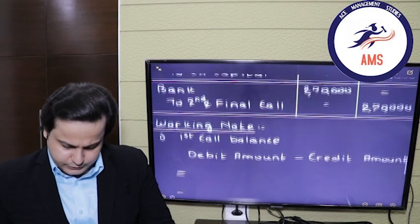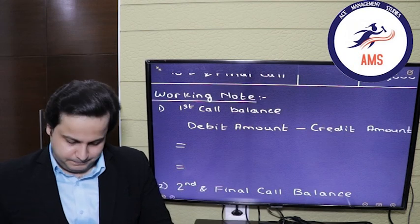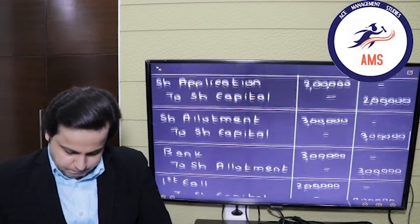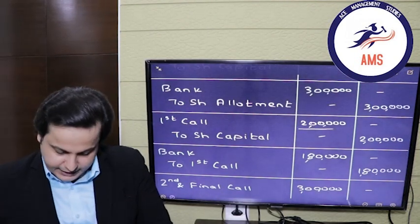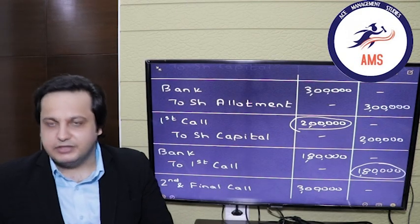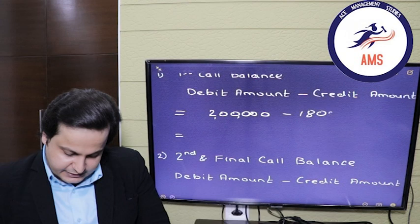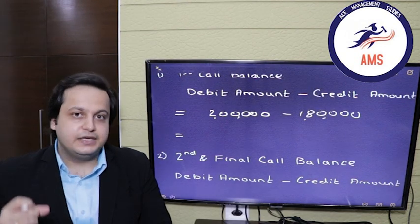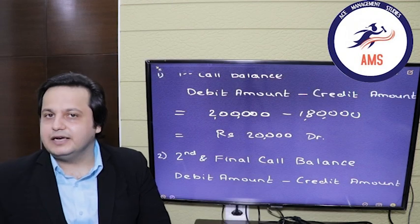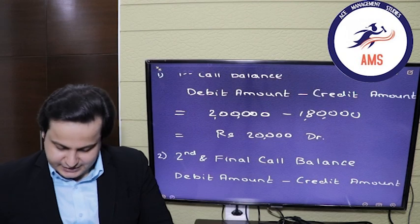Let's take a moment to explain the first call balance and the second call balance. For the first call, the debit amount was 2 lakh rupees and the credited amount was 1 lakh 80,000 rupees. So the first call will have a debit balance of 20,000 rupees. This is a debit balance, and as we have seen, call-in arrears is an asset — assets always have a debit balance.